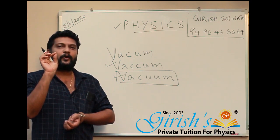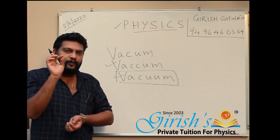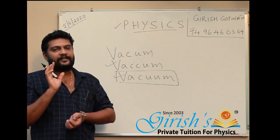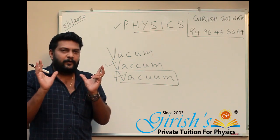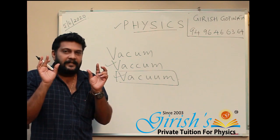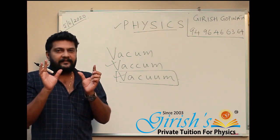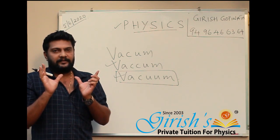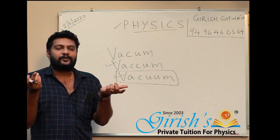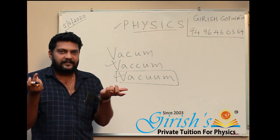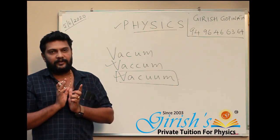Newton's Universal Law of Gravitation: every particle in the universe attracts every other particle with a force that is directly proportional to the product of their masses and inversely proportional to the square of the distance between them.